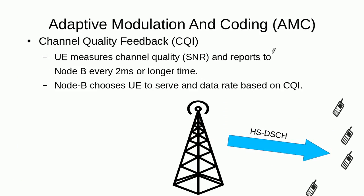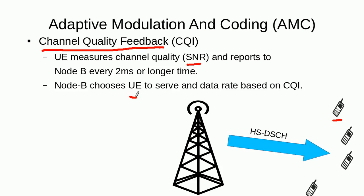The next question is: how does Node B know that a user equipment has good or bad channel conditions? Basically, each user equipment measures the quality of SNR it is receiving and then sends feedback to Node B on the uplink channel in the form of a channel quality indicator, or CQI. Based on the CQI, Node B can decide which user equipment to schedule and what data rate to give them.